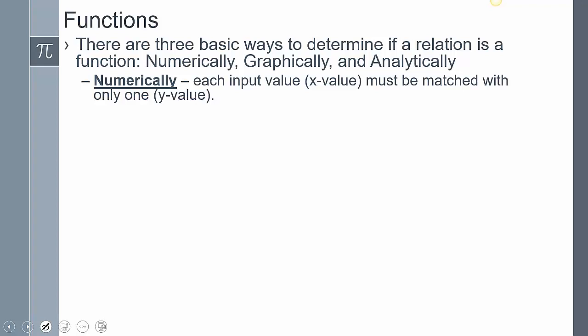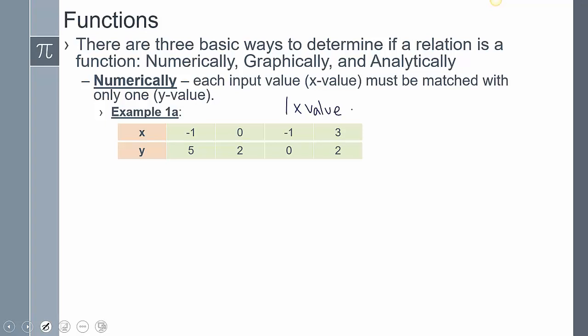There are going to be three basic ways to determine if a relation is a function: numerically, graphically, and analytically. Let's first examine the numerical way. If a relation is going to be a function, we can only have one x value mapping to one y value — meaning we cannot have one x value mapping to two y values.